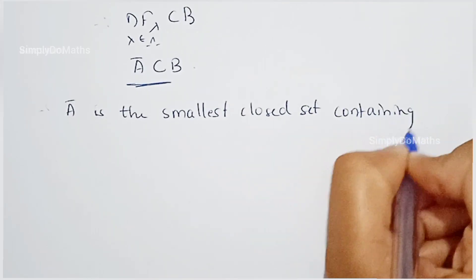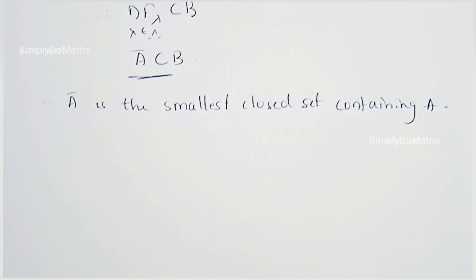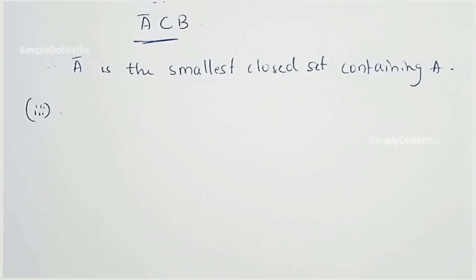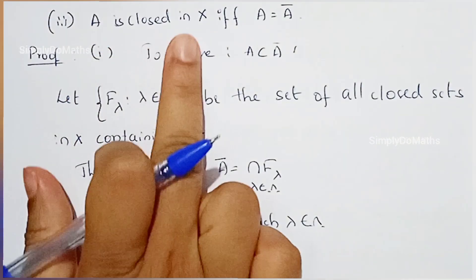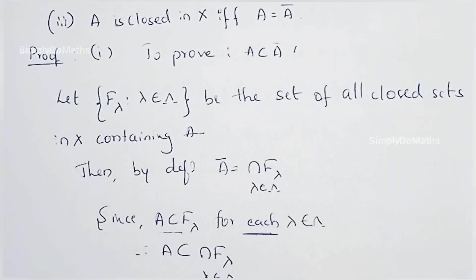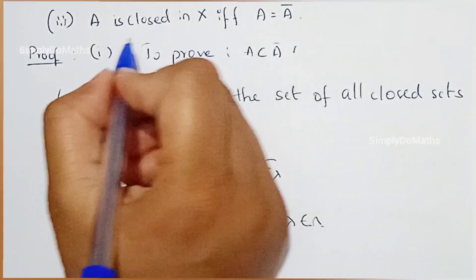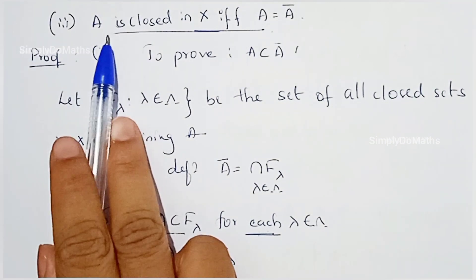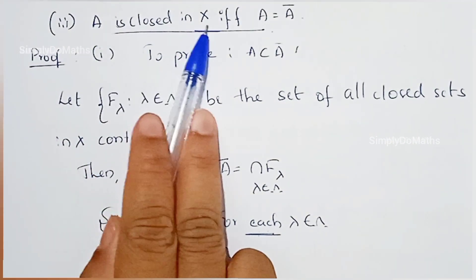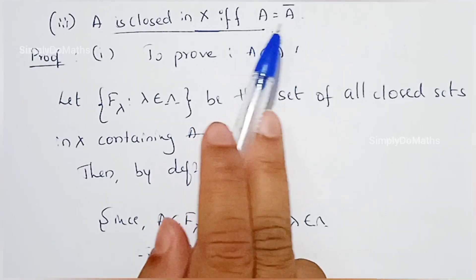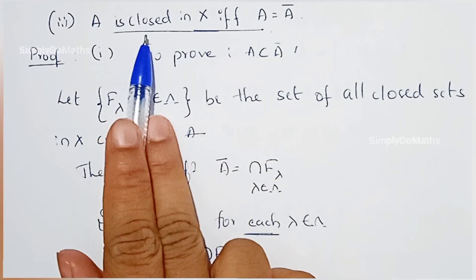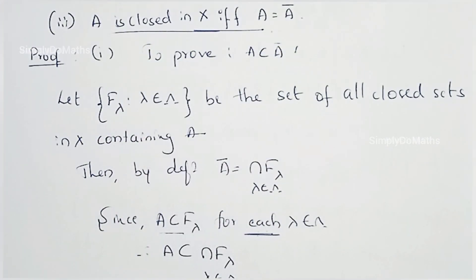Now let's move to the third property: A is closed in X if and only if A equals Ā. Since this is an if-and-only-if statement, we need two directions. First, take 'A is closed in X' as the hypothesis and prove A equals Ā. Second, take 'A equals Ā' as the hypothesis and prove A is closed in X.